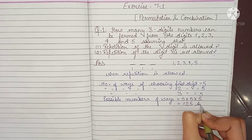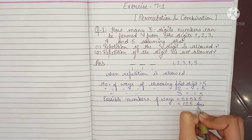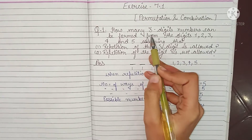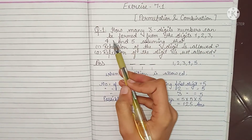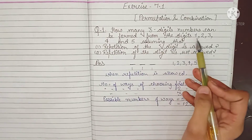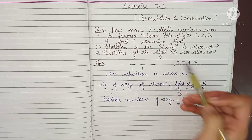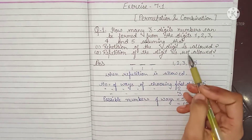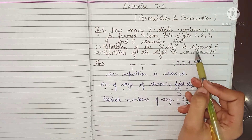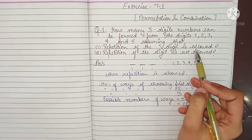125 is your answer. It means to form 3-digit numbers, total number of ways is 125 if repetition of the digit is allowed.